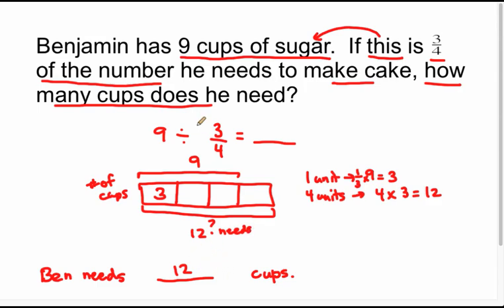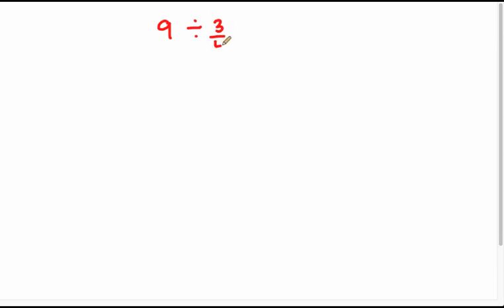Now that's one way to solve it, because this problem really required us to use the partitive interpretation of division — that's why I drew this model. However, if you just see this division expression and you're asked to find what the quotient is, you can draw a visual model using the measurement interpretation. So you're asking: how many groups of three-fourths are there in nine?